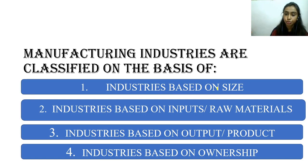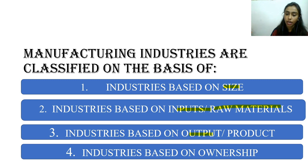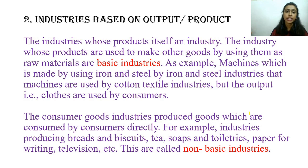The first two videos covered industries based on size, and industries based on inputs and raw materials — those two topics are finished. Today we will cover two more categories: industries based on output and products, and industries based on ownership. First, we will do industries based on output and product.